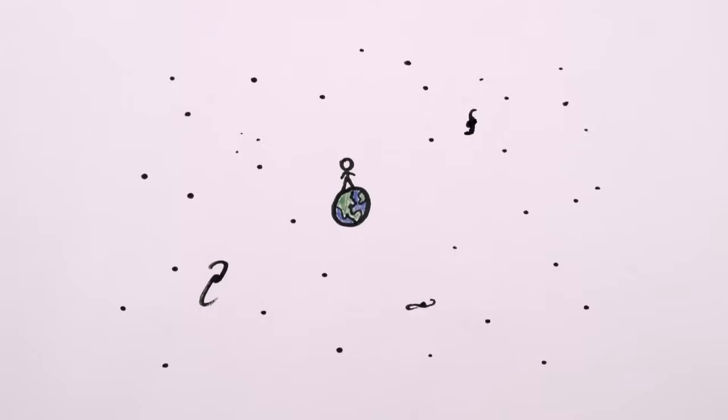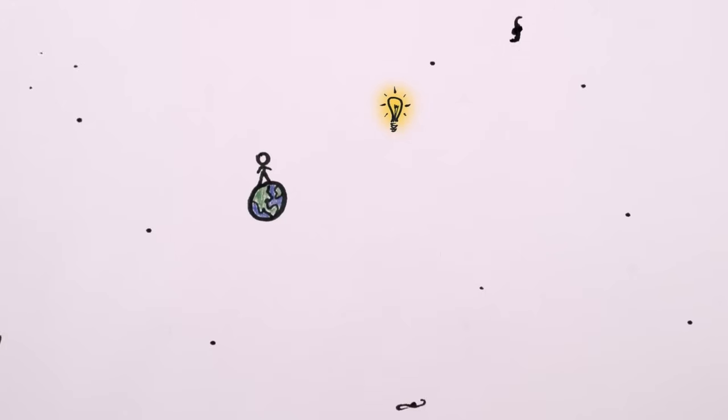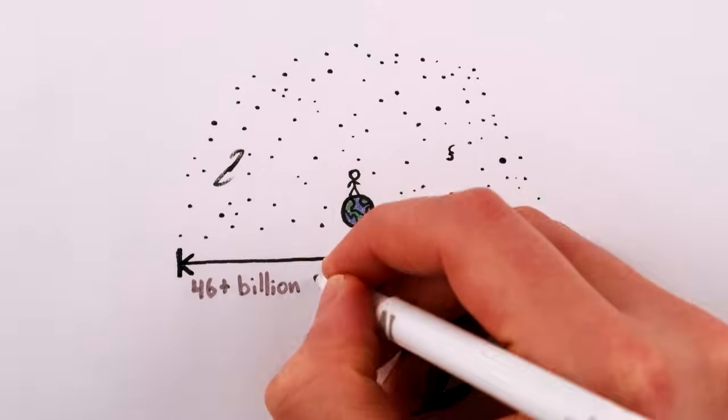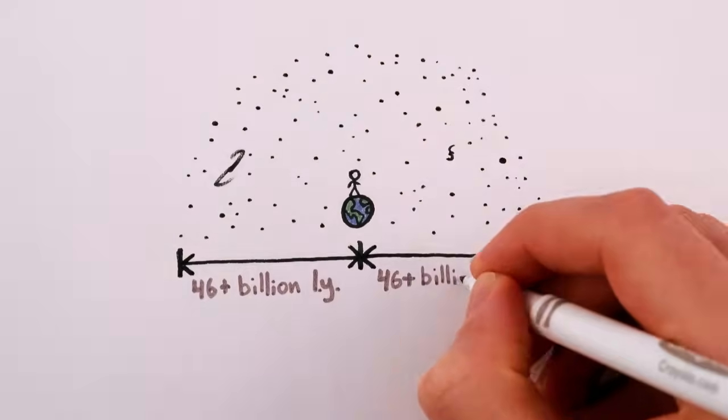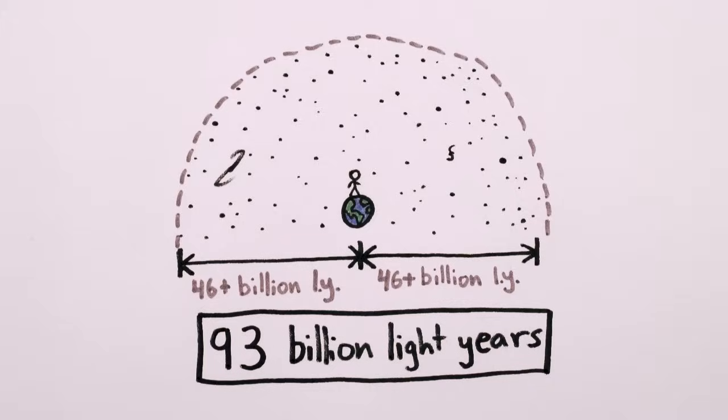That's because over time, space has been expanding, so the distant objects that gave off that light 13.8 billion years ago have since moved even farther away from us. Today, those distant objects are a bit more than 46 billion light years away. Multiply times 2 and you get 93 billion light years, the diameter of the observable universe.